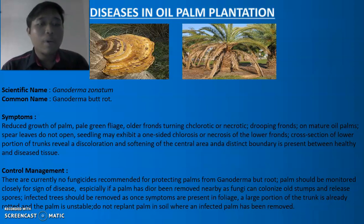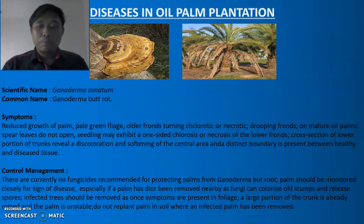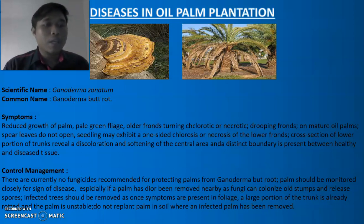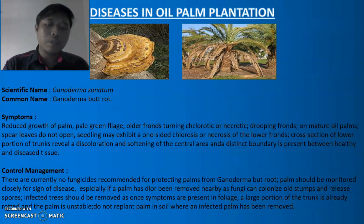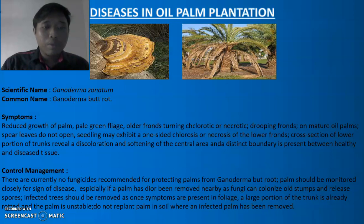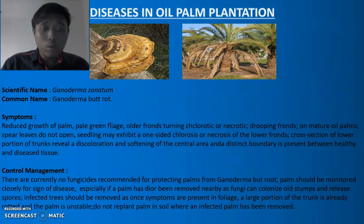The control management for Ganoderma: there are currently no fungicides recommended for protecting palms from Ganoderma basal stem rot. Palms should be monitored closely for signs of disease, especially if a palm with a basidiocarp fungi has been removed nearby, as fungi can colonize old stumps and release spores. Infected trees should be removed as soon as symptoms are present in the foliage. Importantly, do not replant palm in soil where an infected palm has been removed.